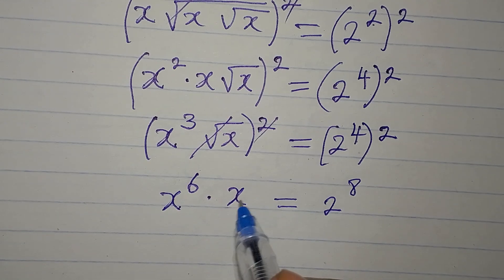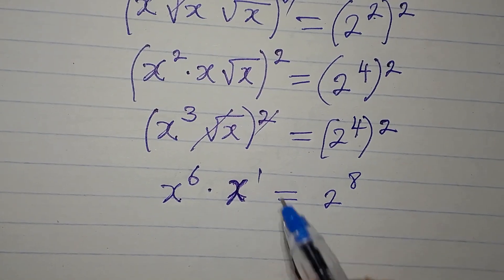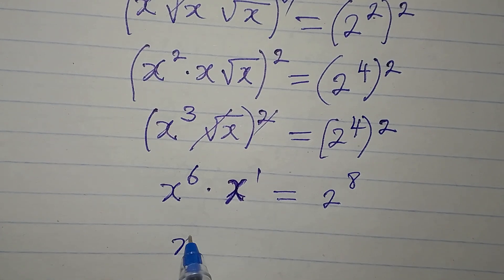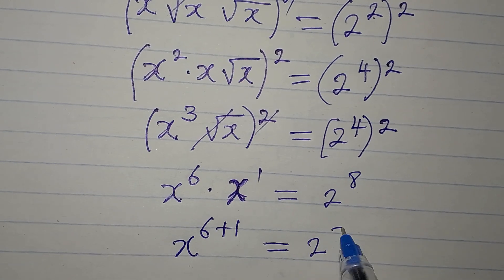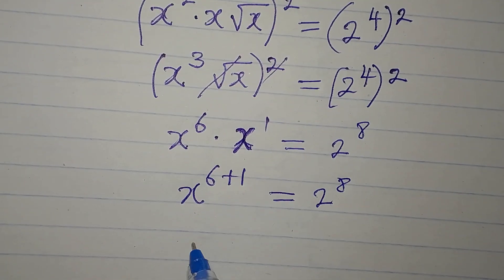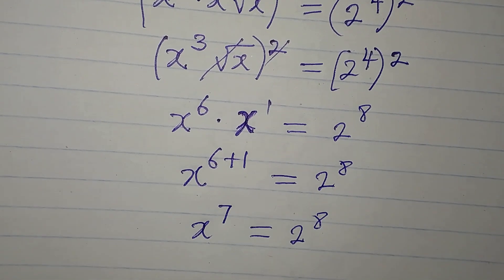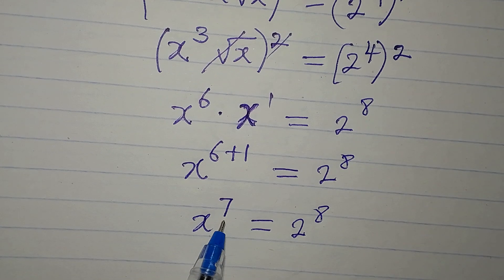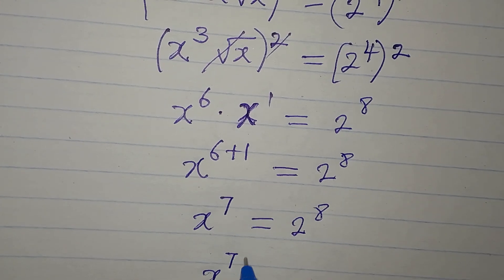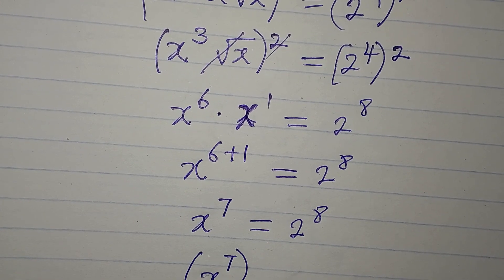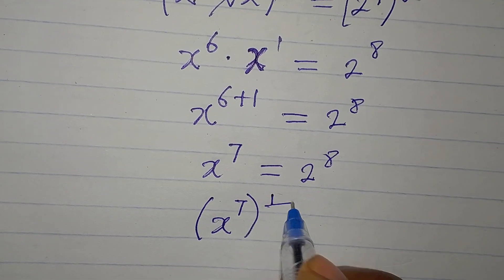Now we are multiplying x to the power of 6 and x to the power of 1, so it's x to the power of 6 plus 1, which equals 2 to the power of 8. That gives us x to the power of 7 equals 2 to the power of 8. To remove this power we raise both sides to the reciprocal, which is 1 over 7.